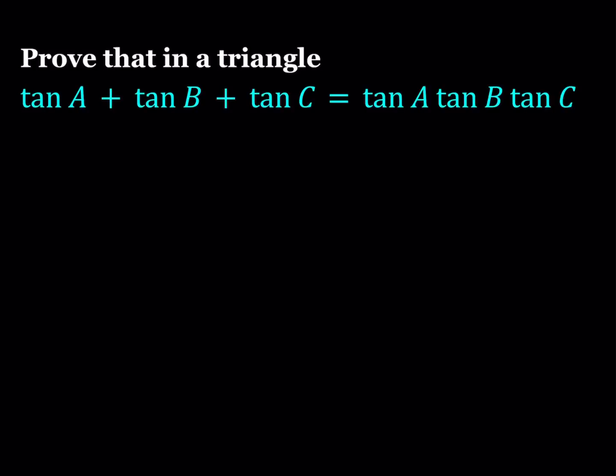Hello everyone. In this video, we're going to be proving a trigonometric identity: prove that in a triangle, tangent A plus tangent B plus tangent C equals tangent A times tangent B times tangent C. ABC is a triangle — it doesn't have to be a right triangle — and we're going to prove that this identity holds for any triangle. I'm going to be presenting two methods.